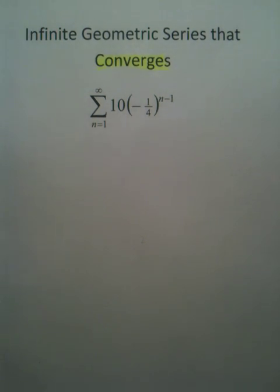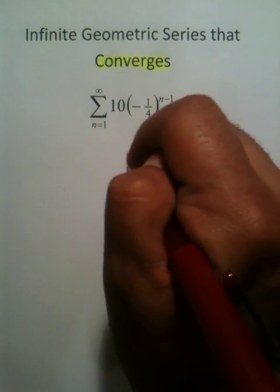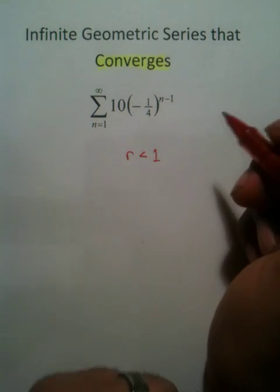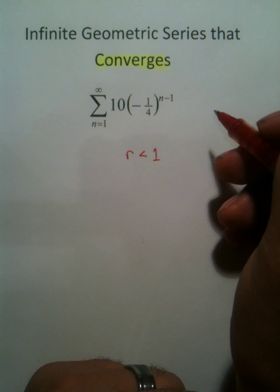So how do we know when an infinite geometric series is going to converge? When your r value is less than one, you are going to get an answer to an infinite geometric series.